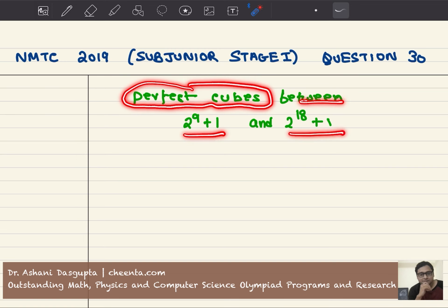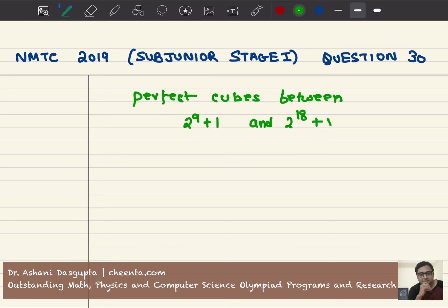You can pause the video here and give it a try yourself. What is a perfect cube? 1 cubed is equal to 1, this is a perfect cube. 2 cubed is 8, a perfect cube. 3 cubed is 27, a perfect cube, and so on. We want to count the number of perfect cubes between these two numbers.